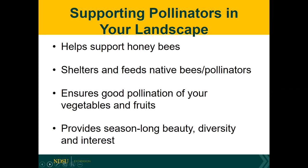By supporting pollinators in our landscape we're helping to support honeybee populations and providing shelter and food for native bees and other pollinators. I will be using the word 'native' a lot, so I should define that. Native means that a particular species — whether it's a pollinator or a plant — originates from a specific area or region and is adapted to that area's climate, soil types, and so on. When possible, we want to grow native plants to support the native pollinator population.